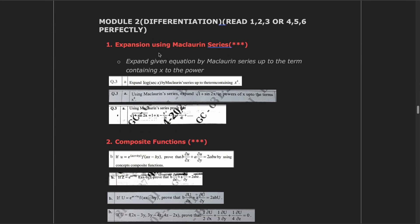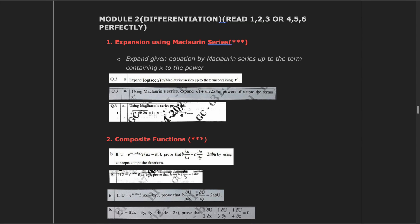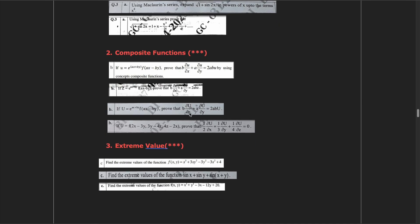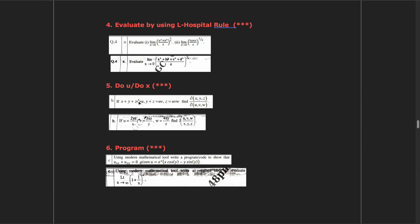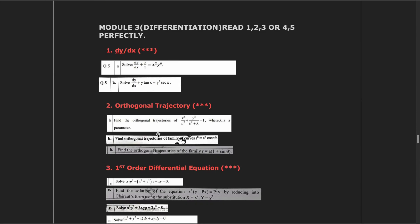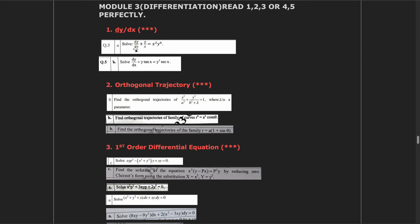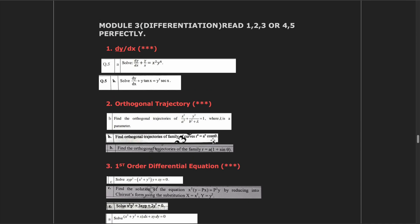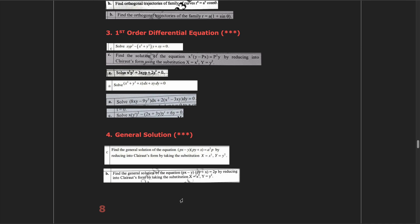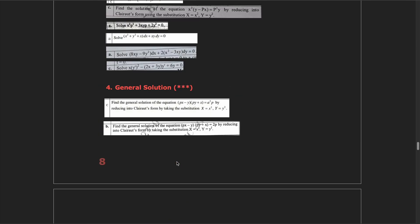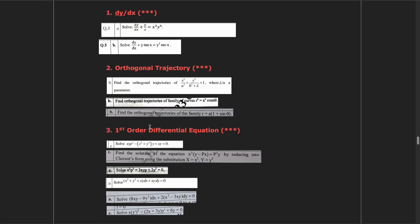Module 2 is also about differentiation. The first question is always about expansion using McLaren series — simple differentiation. The second question is about composite functions, and the third is extreme value. In the lower part: evaluate using L'Hospital rule, ∂u/∂x, and program. Module 3 is also about differentiation. The first question is dy/dx, the second is orthogonal trajectory, and the third is first-order differential equation. Focus on these upper three — the lower part has general solutions and theoretical questions which are comparatively harder.